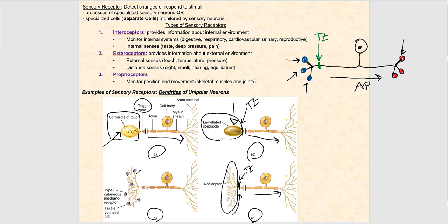Let's look at figure B. If you remember our discussion of the integumentary system, at the stratum basale of our epidermis we have tactile epithelial cells, also called Merkel cells, that respond to light touch and are associated with the tactile disc. Those tactile discs are actually dendrites of the sensory neuron. These tactile epithelial cells — these Merkel cells — are the separate cells monitored by the sensory neuron, monitored by the tactile disc. A graded potential travels to the trigger zone in response to light touch applied to the surface of the skin.